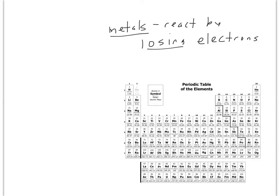Metals, remember, are everything to the left of this staircase, and they typically are going to lose electrons. So lithium has one electron in its outer shell, it's going to try to lose that electron. Magnesium has two in its outer shell, it's in the second column, it's going to lose those two electrons.